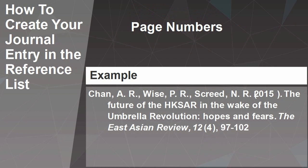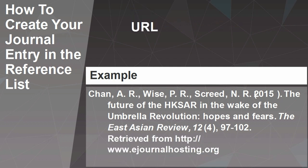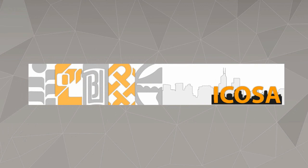Then insert the page numbers of the article, followed by a full stop. If the article is from an electronic version of the journal, you then add the DOI or URL. Remember to indent the second and subsequent lines of your end-of-text reference list. I hope you found this video useful, and for more information on APA referencing, click on the link below.